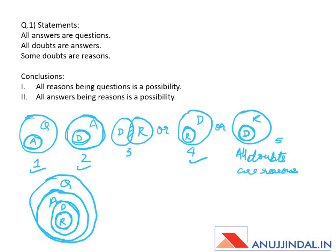From this combined Venn diagram of one, two, and four, you can see that conclusion one — all reasons being questions is a possibility — holds, because reasons are inside questions. So conclusion one follows.